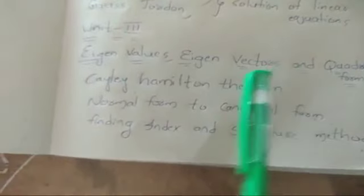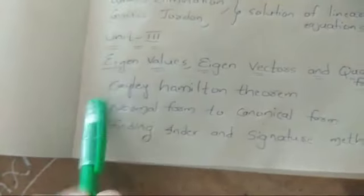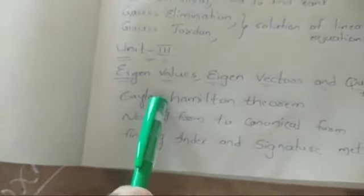Then coming to Unit 3: Eigenvalues, Eigenvectors and Quadratic Forms. There will be compulsory 5 marks or 10 mark question regarding Cayley-Hamilton theorem, which is easy and interesting. If you practice 2 or 3 times, you can get the method easily.